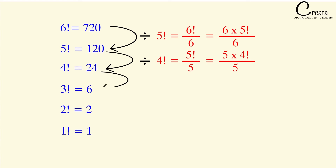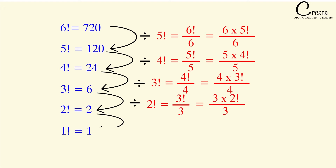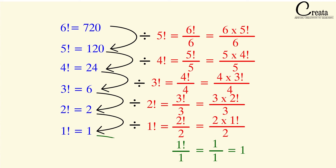Similarly, 4 factorial divided by 4 gives 3 factorial. 3 factorial divided by 3 is 2 factorial. 2 factorial divided by 2 is 1 factorial. And 1 factorial divided by 1 is 0 factorial. The value of 0 factorial is 1. This is the technique through which we calculate the value of 0 factorial. Just dividing a factorial by the number itself gives the factorial of the previous number. So 0 factorial equals 1 factorial upon 1, which is 1.